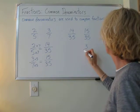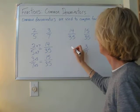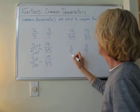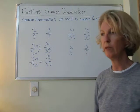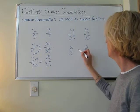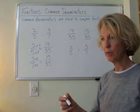So, 3 sevenths is bigger than 2 fifths. And on a test, if you are asked to order these fractions from least to greatest, the answer would be 2 fifths comma 3 sevenths.